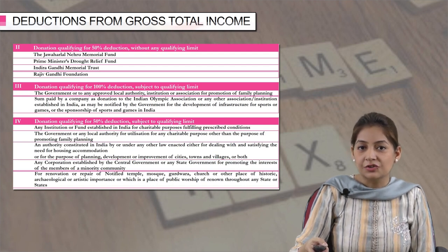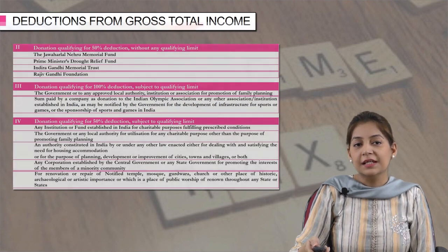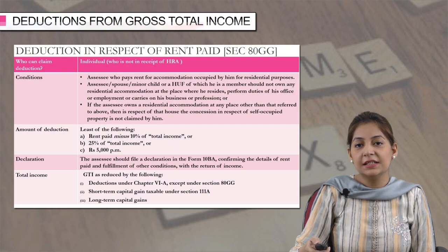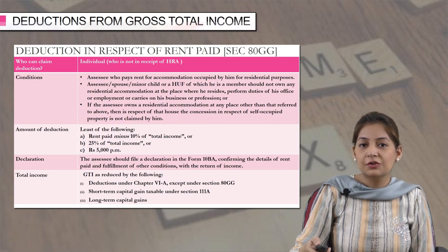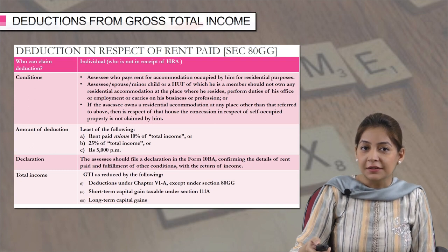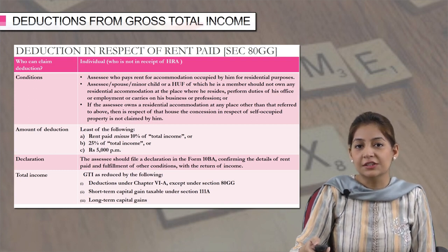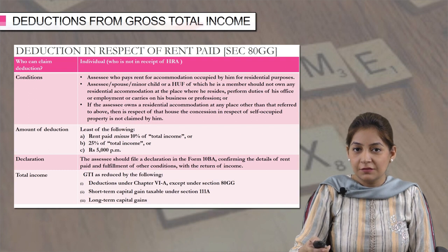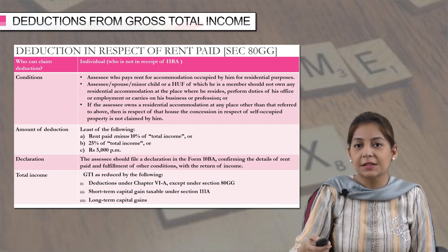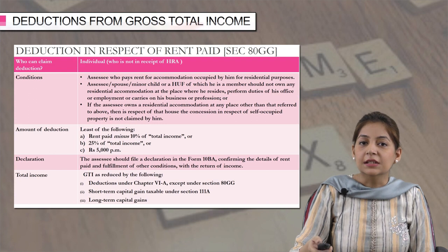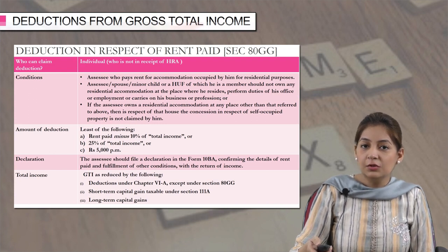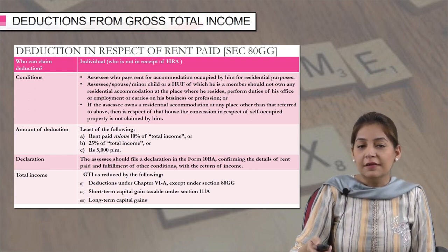So that was section 80G in respect of donation to certain funds. Next is section 80GG. This deduction is in respect of rent paid, and here who can claim the deduction? An individual who is not in receipt of HRA. Let us understand the concept behind this deduction. If you are an employee and you are getting HRA, your salary component includes HRA, you are receiving it from your employer, and you are paying rent — you can claim the exemption of HRA under section 10(13A).